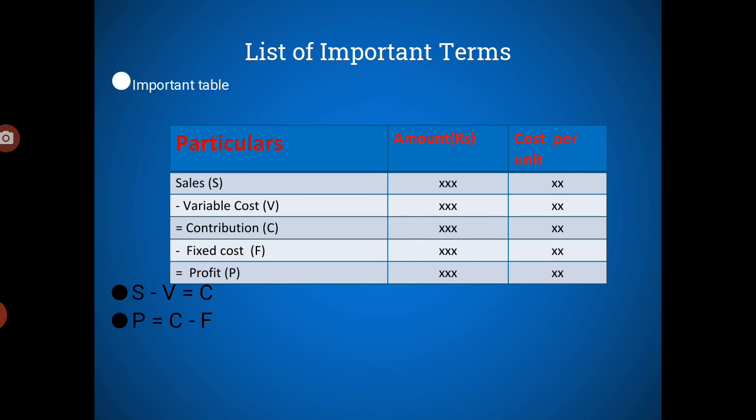By deducting variable cost from sales, I get contribution. From sales, once all variable costs are recovered, the remaining amount is called contribution. From contribution, fixed cost is deducted — that gives profit. For any business, it is vital to cover the variable cost first. The primary target of the business from sales is to recover variable cost, and then fixed cost is recovered. So: sales minus variable cost equals contribution.